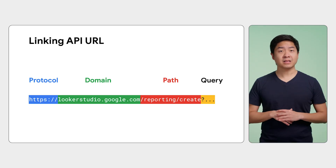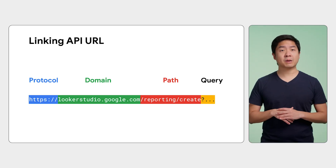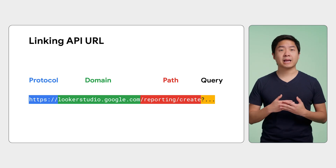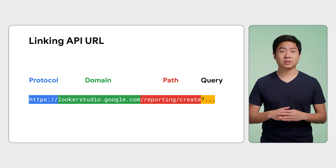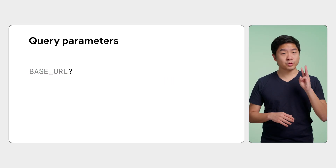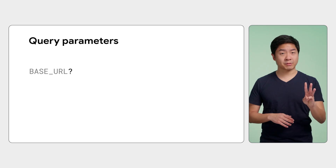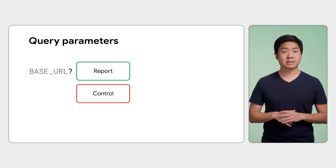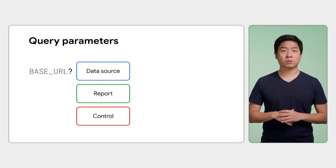The subsequent query parameters of the Linking API URL determine what report to use as a template and how to configure the report. You need to keep track of three kinds of query parameters: control, report, and data source query parameters.